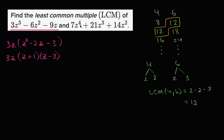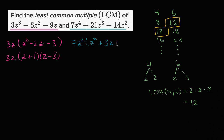Now let's factor the fourth-degree polynomial, 7z⁴ plus 21z³ plus 14z². Every term is divisible by 7z², so we factor out 7z² to get 7z² times (z² plus 3z plus 2). Factoring the quadratic: 2 times 1 is 2, and 2 plus 1 is 3, so that factors into (z + 1) times (z + 2). The full factored form is 7z² times (z + 1) times (z + 2).